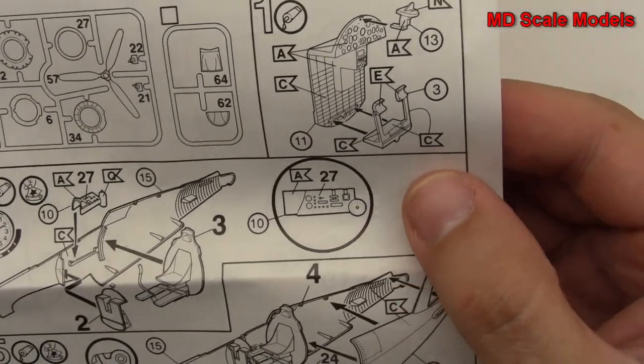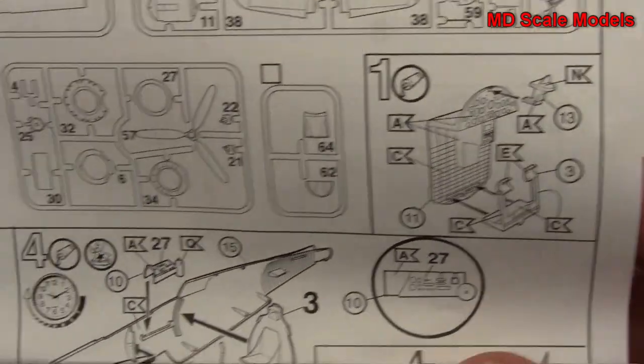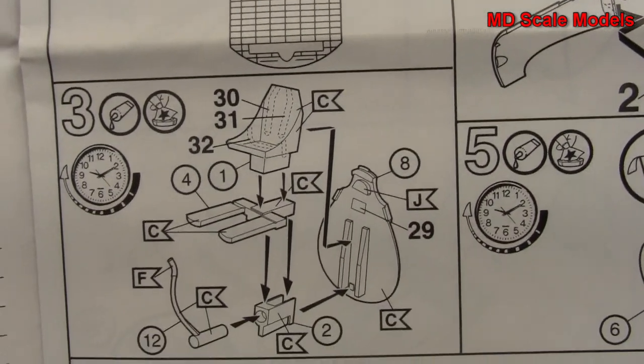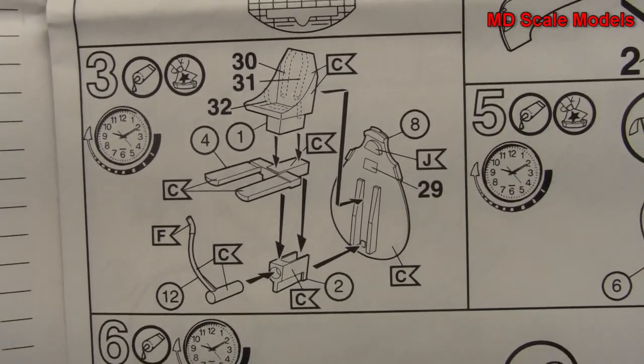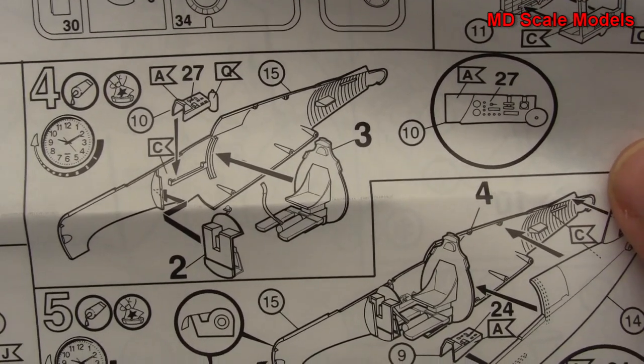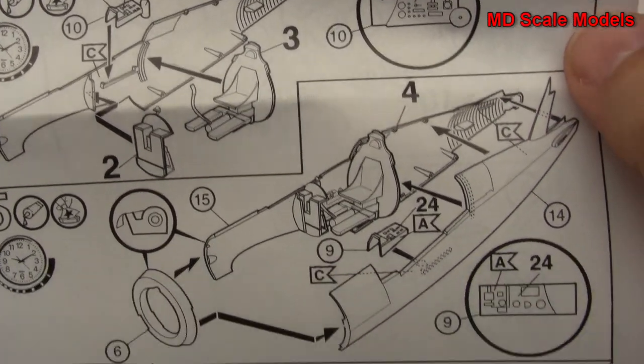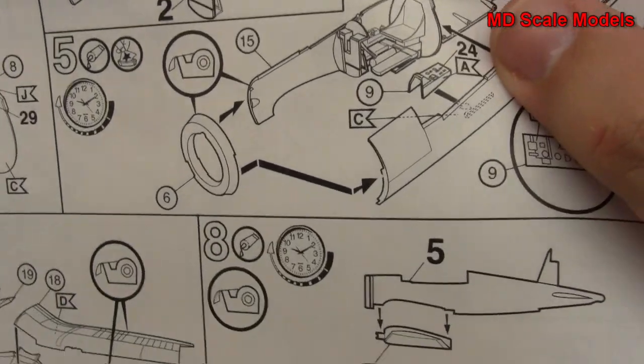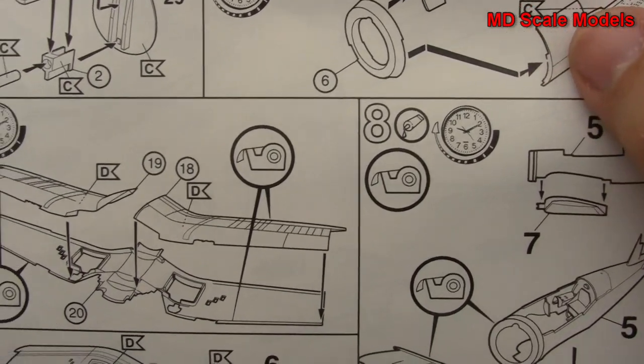Here is the parts listing. And we start off with the cockpit there. It shows you how to put the decal there, firewall, control column and so on, the seat. That all gets mounted to the inside of the fuselage with the fuselage halves together along with the firewall for the engine.